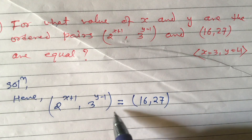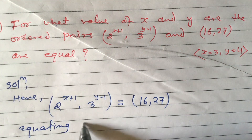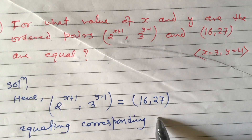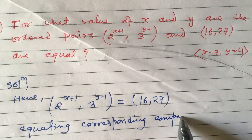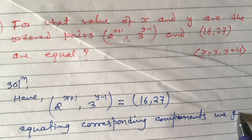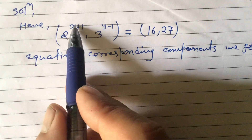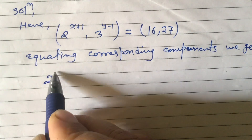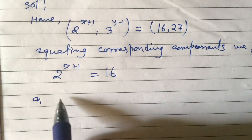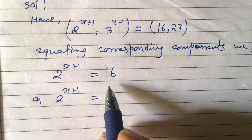Equating corresponding components, we get: 2^(x+1) equals 16. We can also write 16 in the form of a power of 2, so 2^(x+1) equals 2^4.